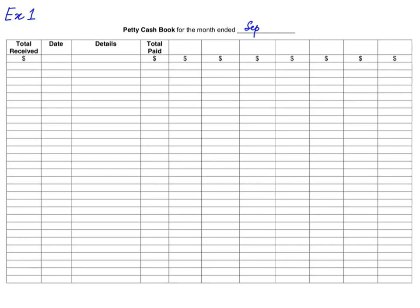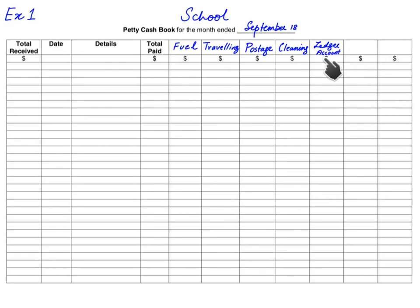The month given in the question is September 2018, and the heading is for the school. Now there are analysis columns that need to be made. Looking at the question, some types of expenses are repeated continuously. One is petrol, so I am making a fuel column — a motor expense column would also be fine. Then there is traveling of staff, so I am making a traveling expenses column. Postage is repeated frequently so I am making a postage analysis column, then a cleaning column, and lastly a ledger account column for payments to suppliers/creditors.